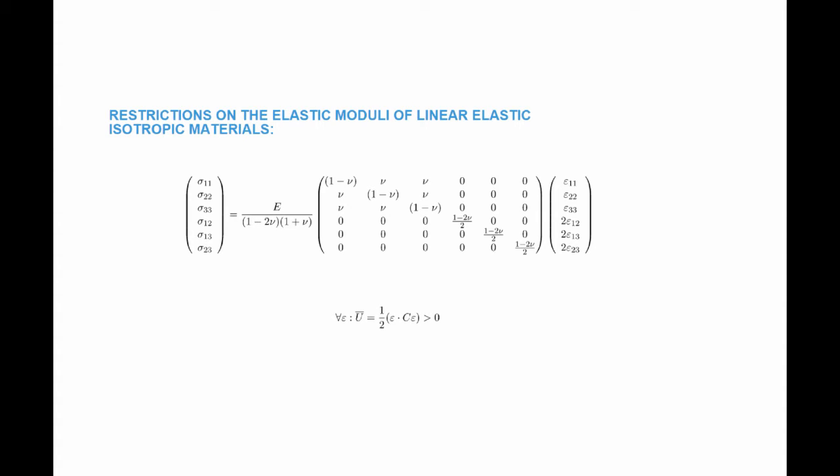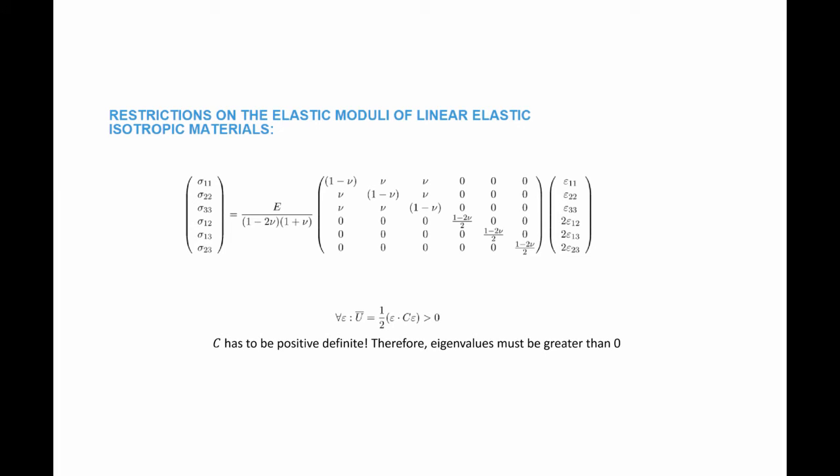In order for the linear elastic material model to behave in a nice way, I want the relationship between the stress and the strain to satisfy the following restriction. Every time I apply a particular strain on the material, I want energy to go into the deformation of the material. So I want epsilon multiplied by C epsilon — or the stress multiplied by the strain, the dot product between those two — to always be greater than zero. This means that C, which is already a symmetric matrix, has to be positive definite.